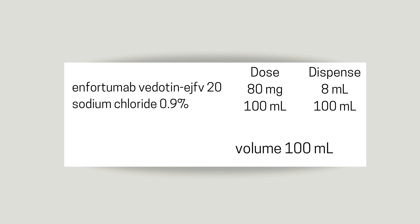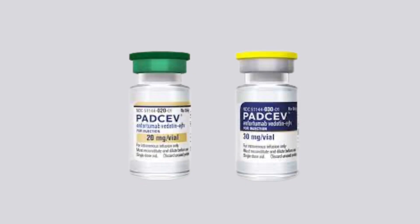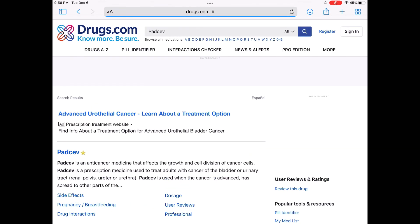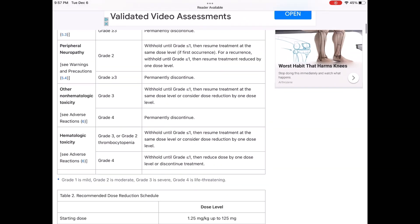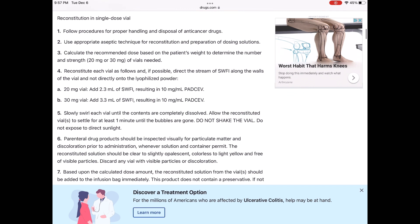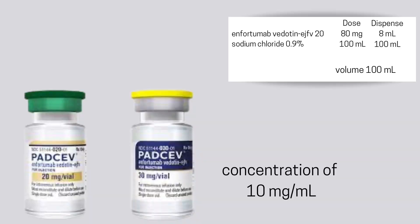For this next one it's a chemotherapy medication. The dose is 80 milligrams, dispense 8 mls, in a sodium chloride 100 ml bag, total volume 100 ml. I'm going to use a 20 milligram vial and a 30 milligram vial. These vials have to be reconstituted differently since they're different strengths. You can find reconstitution info on drugs.com — search the medication and scroll to reconstitution instructions. The 20 mg vial gets 2.3 mls of sterile water, and the 30 mg vial gets 3.3 mls of sterile water. Both have a concentration of 10 milligrams per ml.